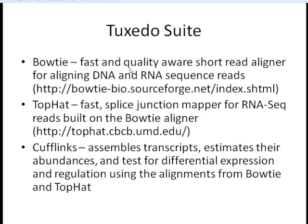Bowtie is for aligning mostly DNA to DNA, but it's also the backbone for aligning RNA to DNA in the program TopHat, which is splice-junction aware — meaning it can identify splice sites — and this is used for RNA-seq reads. It's built on top of Bowtie.